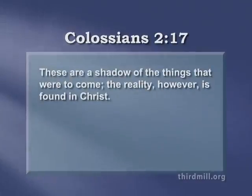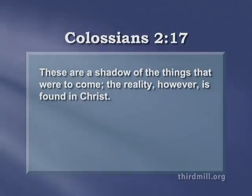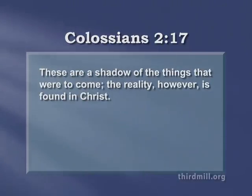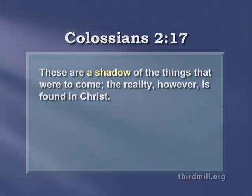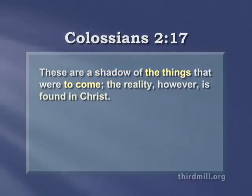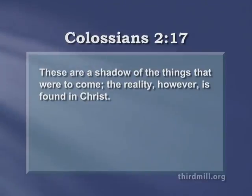In Colossians 2 verse 17, the apostle Paul once spoke of Old Testament ceremonial law with a significant variation in terminology: These are a shadow of the things that were to come. The reality, however, is found in Christ. Here Paul spoke of Moses' ceremonial law as a shadow — skia in Greek — and the things to come as the reality found in Christ. In a similar way, the writer of Hebrews also spoke of types as shadows and anti-types as realities.